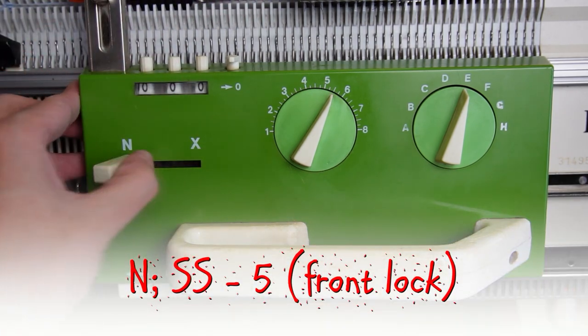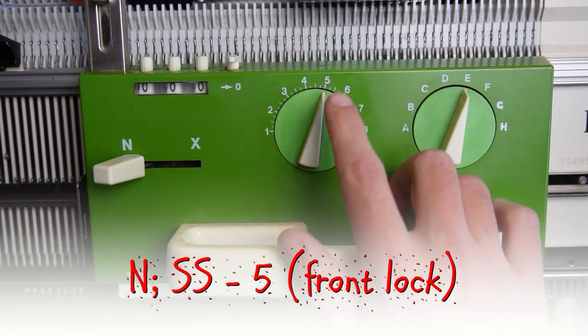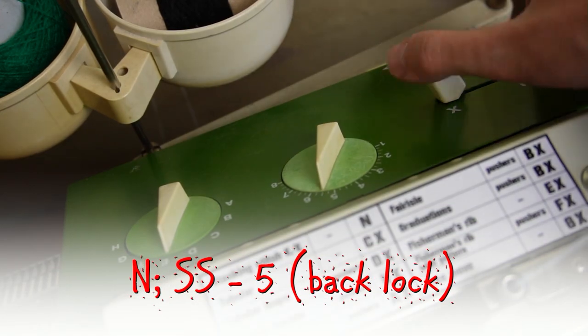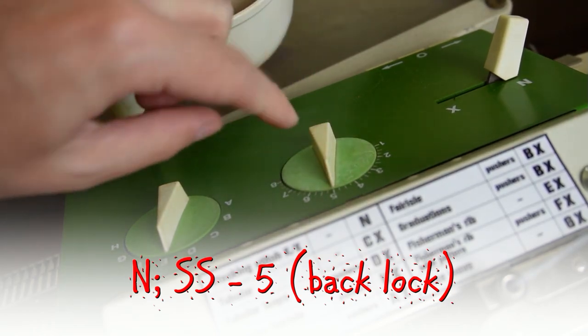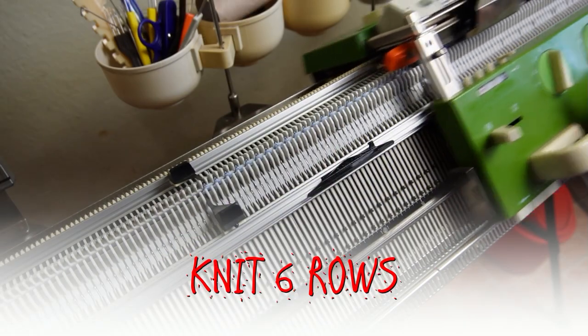Knit six rows. Clear the row counter and set both locks to N and the stitch size to 5. Now knit six rows.